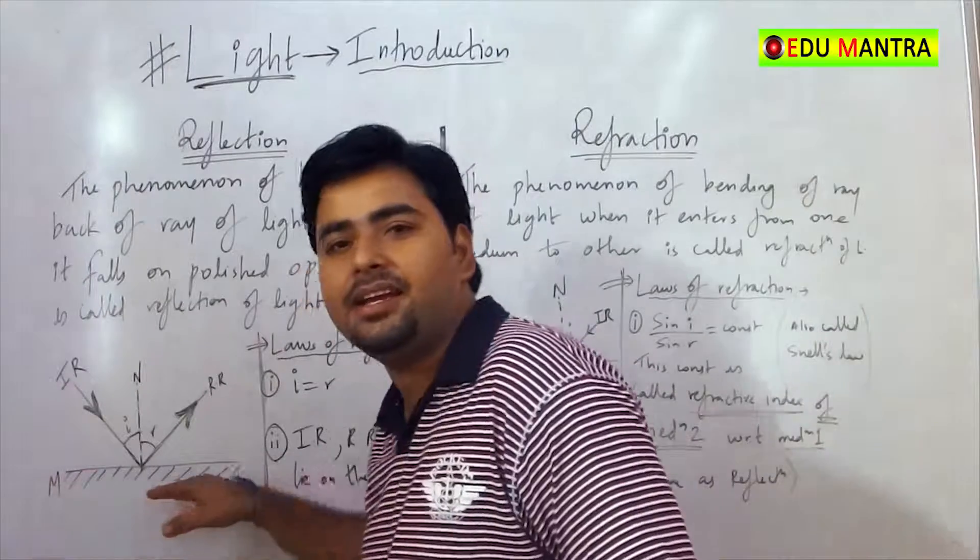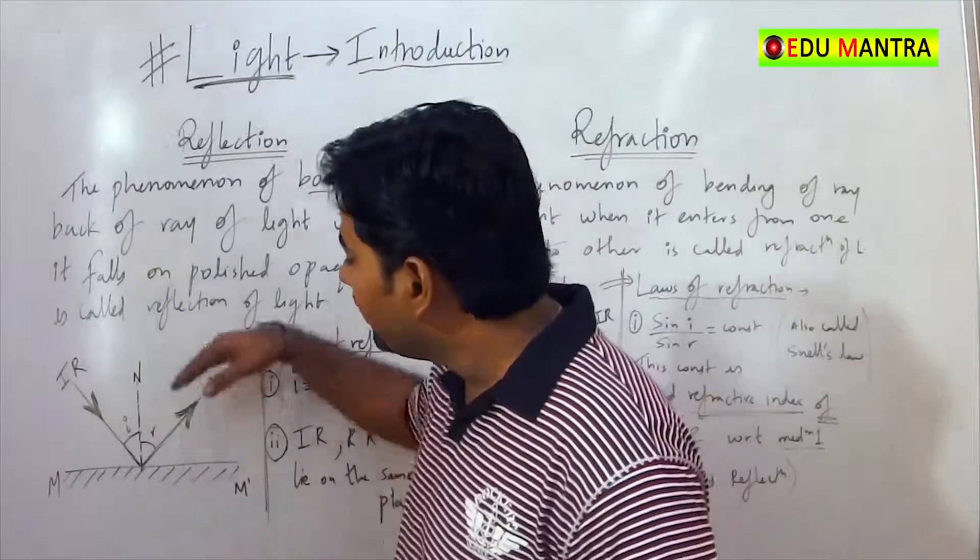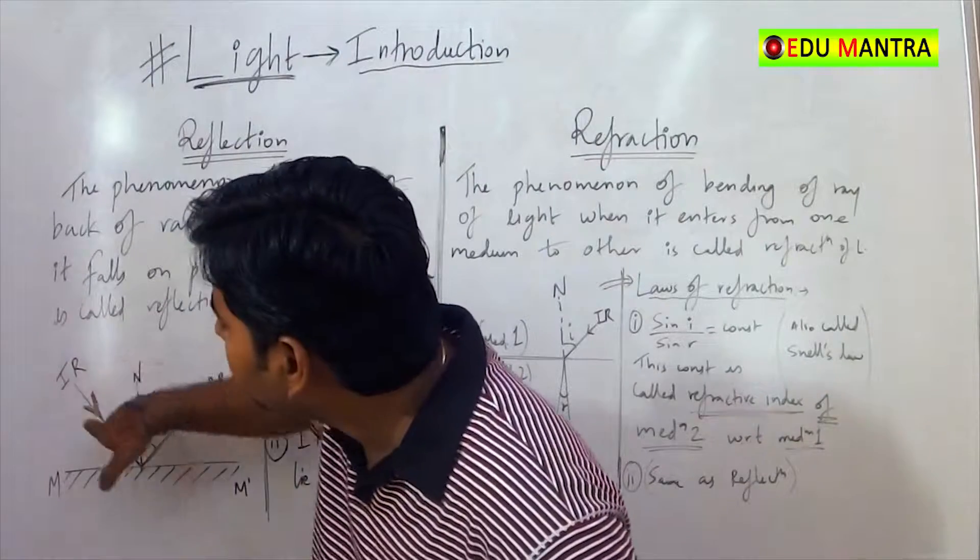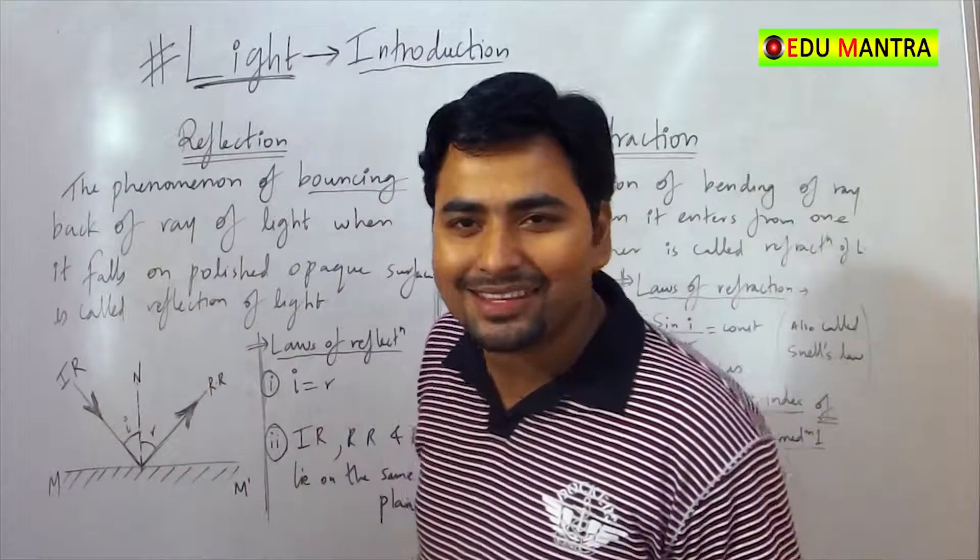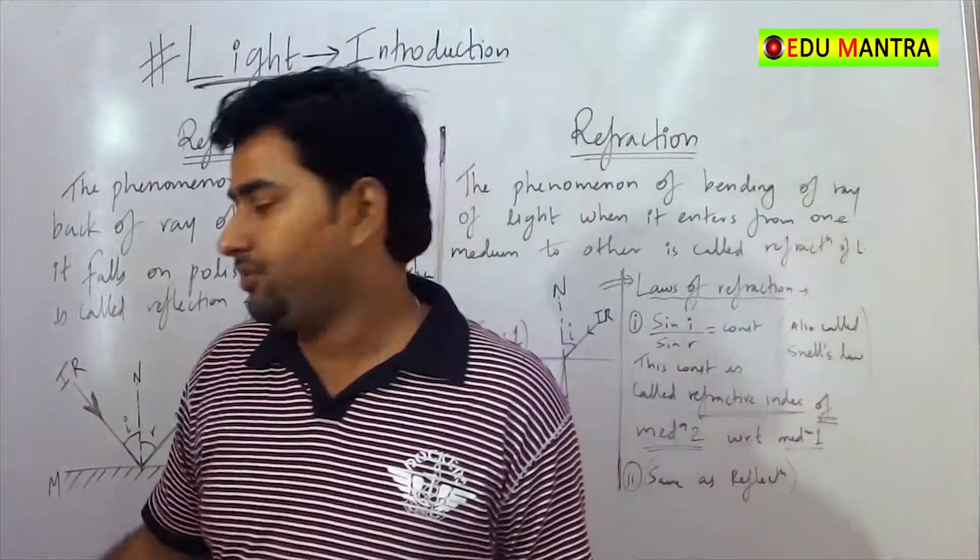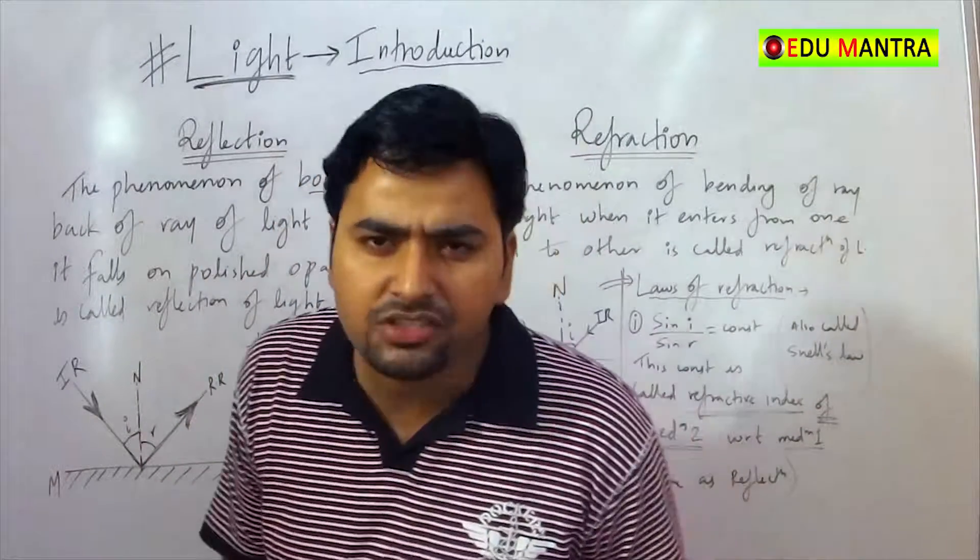Here is a mirror, M dash is a mirror. Here is a light, so this is ray of light, incident ray. Here is a fall and here is a reflected ray. So this phenomenon is called reflection of light.